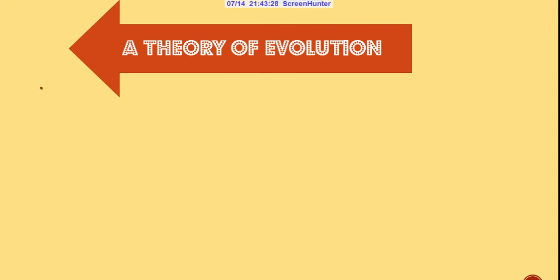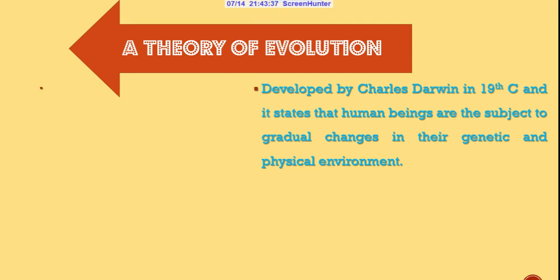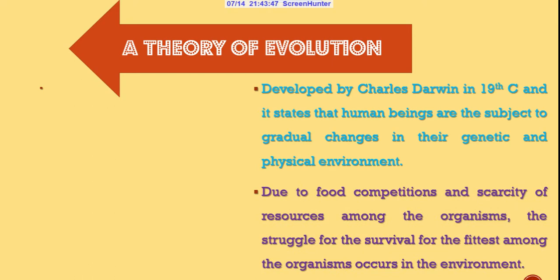The theory of evolution is another theory of development which explains the origin of man. The theory was first developed by Charles Darwin during the 19th century. This theory states that human beings are subject to gradual changes in their genetic and physical environment as a result of competition and the scarcity of food and resources.